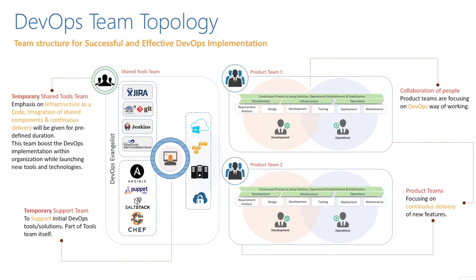DevOps suggests there can be a temporary shared tools team that emphasizes infrastructure as code, integration of shared components, and continuous delivery — given for a predefined duration. This team boosts DevOps implementation within the organization while launching new tools and technology, acting as temporary support for the initial DevOps solution as part of the tooling or team itself.